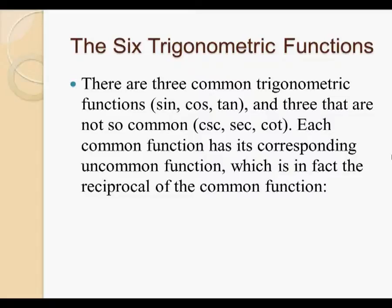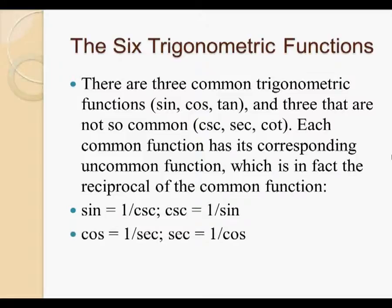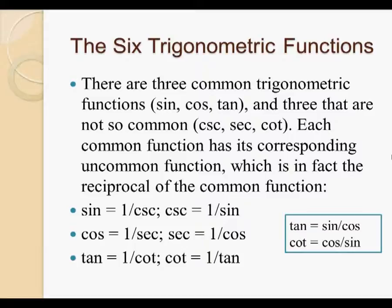Each common function has its corresponding uncommon function, which is in fact the reciprocal of the common function. So we have sine equals one over cosecant, and cosecant equals one over sine. Cosine equals one over secant. Secant equals one over cosine. Notice here that sine and secant do not go together. It's sine and cosecant. You might think that cosine and cosecant should go together, but that is not the case here. Finally, tangent equals one over cotangent, and cotangent equals one over tangent. And remember from the definition of tangent that it is sine over cosine, and cotangent is therefore cosine over sine.